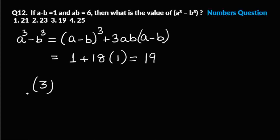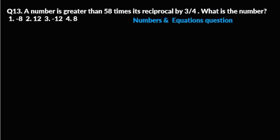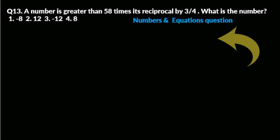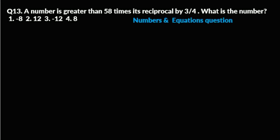Next question: a number is greater than fifty-eight times its reciprocal by three by four. What is the number? You have been given four options. It is a numbers and equation question. Let the number be x. Then x minus fifty-eight times one by x equals three by four. When you solve this it becomes a quadratic equation: 4x² minus 3x minus 232 equals zero. These are big numbers and solving the quadratic would take a lot of time.